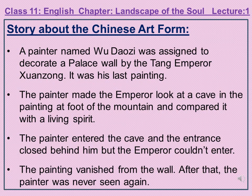The painter said, 'Look, sir. In this cave at the foot of the mountain dwells a spirit' — dwells means lives. The painter clapped his hands and the entrance to the cave opened. 'The inside is splendid' — splendid means superb, very impressive — 'beyond anything words can convey. Please let me show your majesty the way.' The painter entered the cave, but the entrance closed behind him and before the astonished emperor could move or utter a word — utter means speak — the painting had vanished from the wall. Not a trace of Wu Daozi's brush was left and the artist was never seen again in this world.